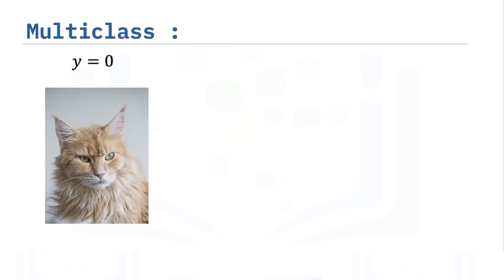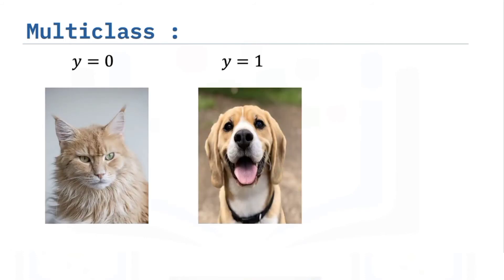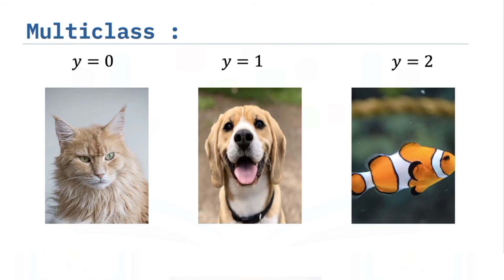Logistic regression can be used for two classes. But how about if we wanted to solve the following three class problem? Consider the following images and their label. We have y equals 0 as cat. y equals 1 for dog. We have y equals 2 for fish.